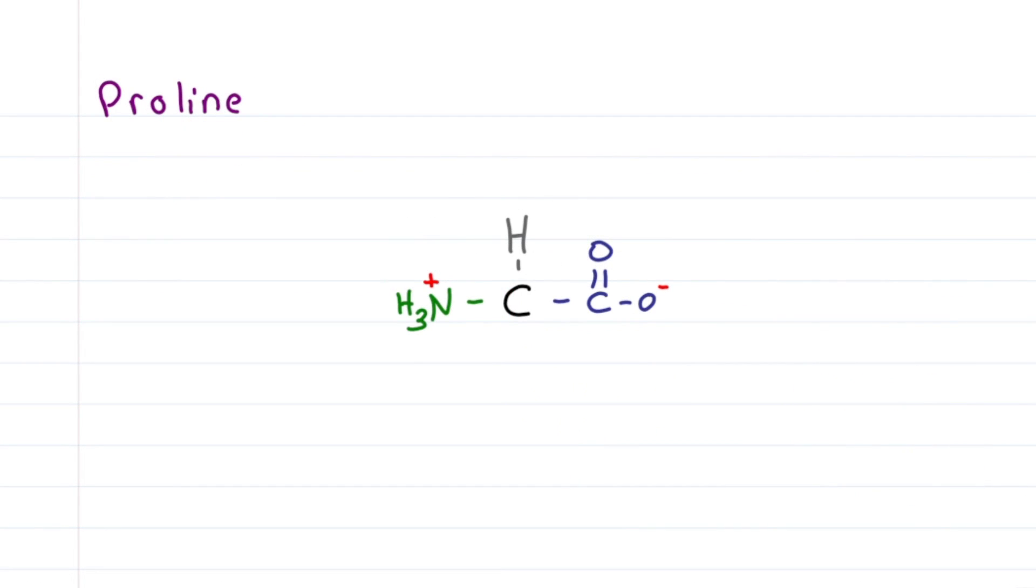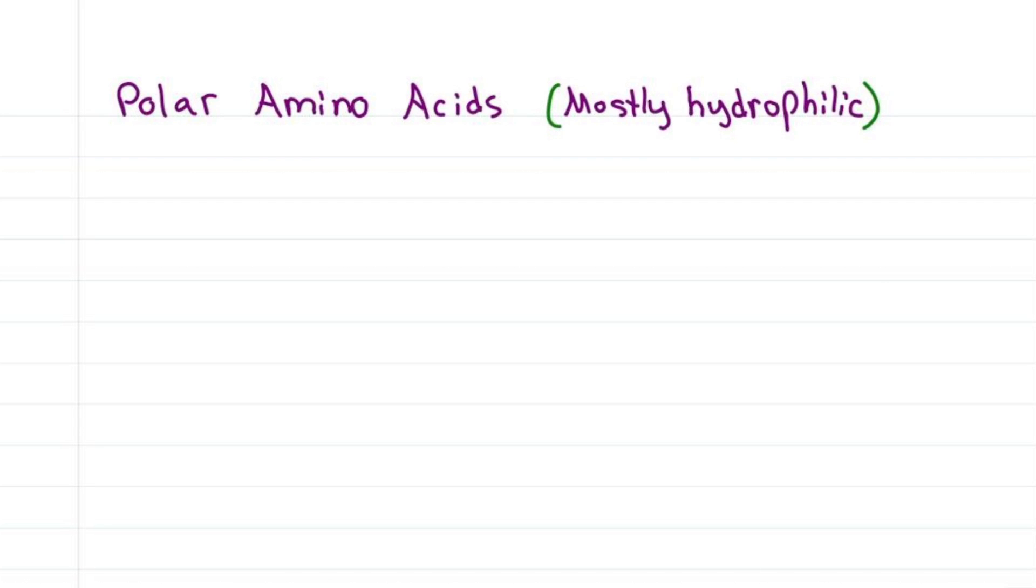Proline is a tricky one because it involves the amine group on the parent chain. Notice how it swings back around just like the letter P. This helps me remember the three letters P-R-O, and their abbreviation P, which swings back around just like the structure. With only carbons and hydrogens, proline is hydrophobic.